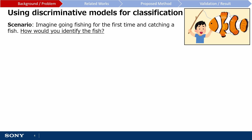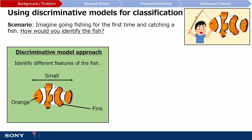Imagine you went fishing for the first time, and lucky for you, you managed to catch a fish. How would you go about identifying the fish? Using a discriminative modelling approach, you would first identify different features of the fish — for example, you might look at the size, or the colour, or the shape of the fish.